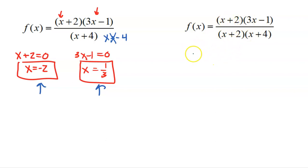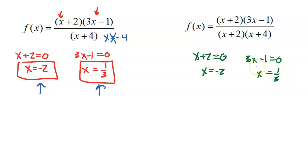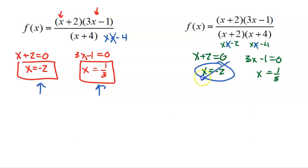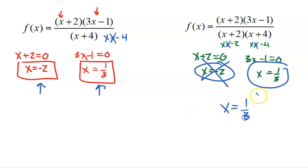Let's check the next example. Again looking at the numerator: X plus two equals zero gives negative two; three X minus one equals zero gives one third. But wait — X equals negative two and X equals negative four are not in the domain because they make the denominator equal to zero. And negative two makes both the numerator and the denominator zero, so I cannot list it as a solution. Therefore the only solution is one third.